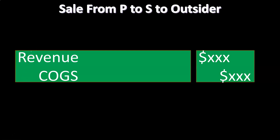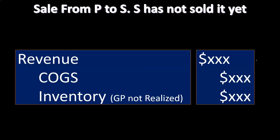Then we have the sale from P to S to an outsider — this one we're going to spend a little more time on. What if the parent sold to the subsidiary and then the subsidiary resold it to an outsider? You're still going to have to remove the revenue on the sale from P to S, because that sale wasn't really an arm's length sale. Then you have to remove the cost of goods sold — the cost of goods sold from S to the outsider — because the cost of goods sold would be overstated. This gets more complicated; you could reverse the full intercompany transaction, or you can net it out and reverse it as efficiently as possible.